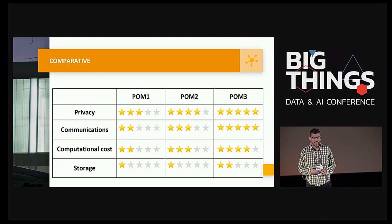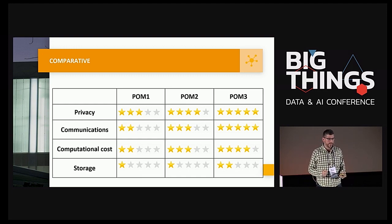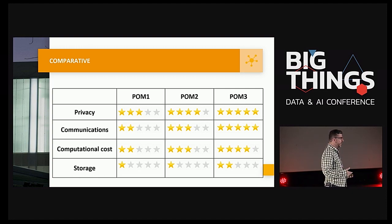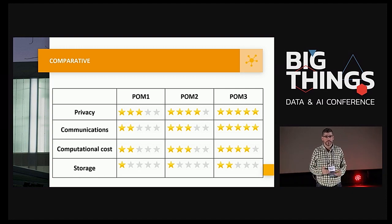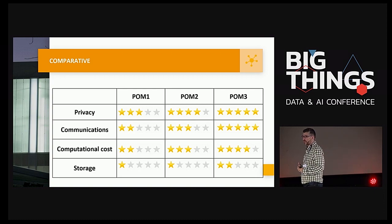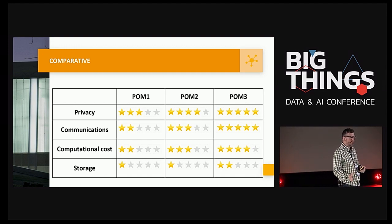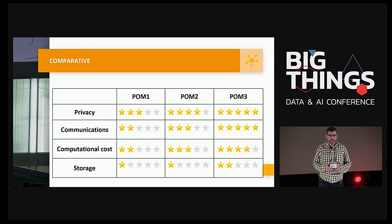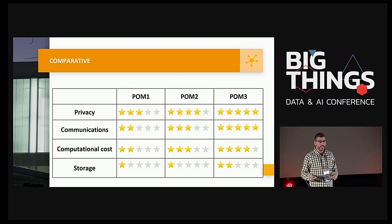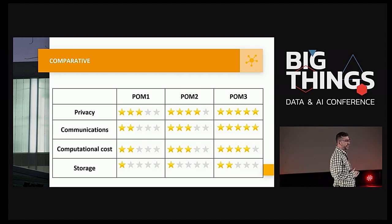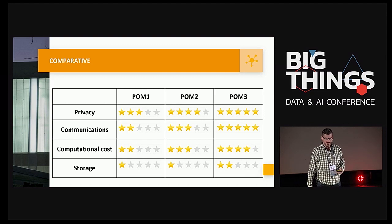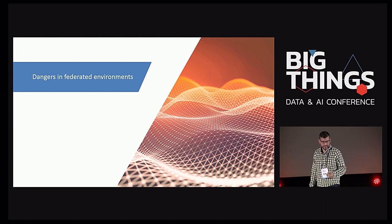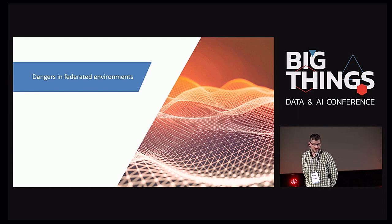As a comparative summary: as we increase the privacy operation mode number, we increase privacy, but also increase communications and especially computational cost, because homomorphic encryption and decryption operations are computationally expensive. Storage increases a little bit, but that's not a major problem. In Musketeer we are also developing more privacy operation schemas, some based on secure multi-party computation where data can be moved to the cloud but encrypted.